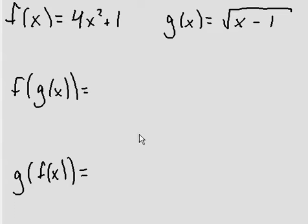Hello and welcome! Today I will be solving these two simple function notation questions and simplifying them a little bit. So f of x is 4x squared plus 1, g of x is the root of x minus 1, and first I want to find f of g of x.